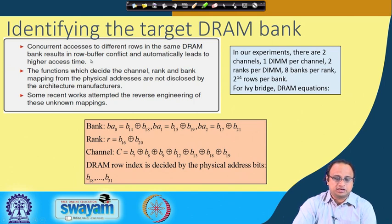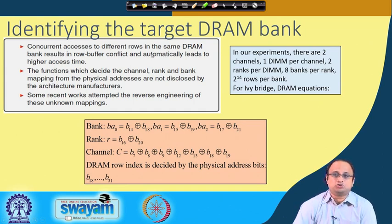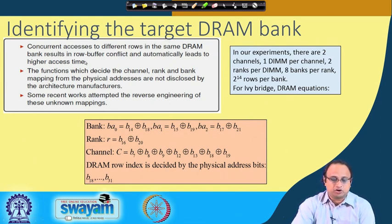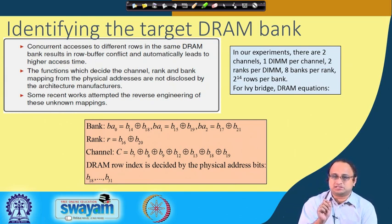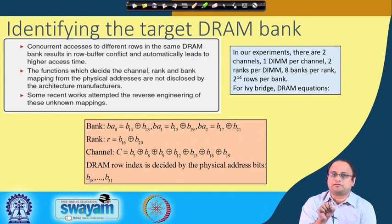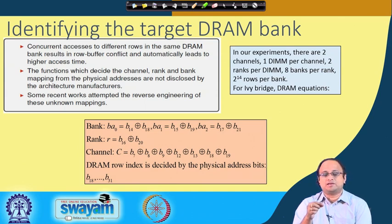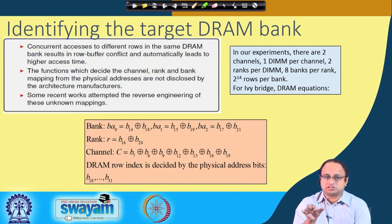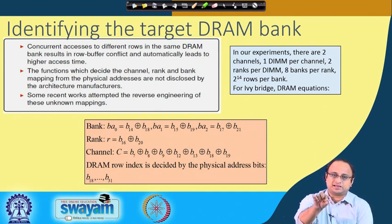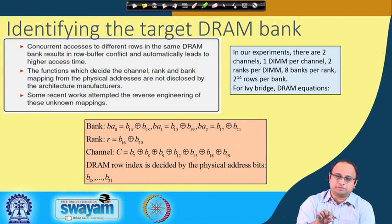The objective is to inflict row hammering by concurrently accessing different rows in the same DRAM bank, resulting in a row buffer conflict as we have discussed. Accessing different rows in the bank evicts the data from the row buffer, so rather than getting data from the row buffer, you access the data from the actual rows. This causes higher access time and we use this timing difference to understand whether we have successfully evicted data from the row buffer and accessed a different row in the bank.